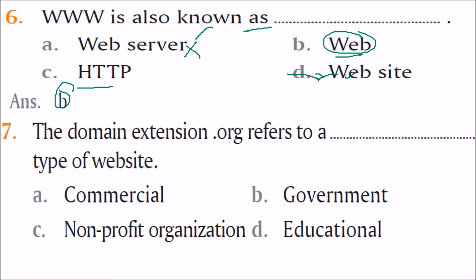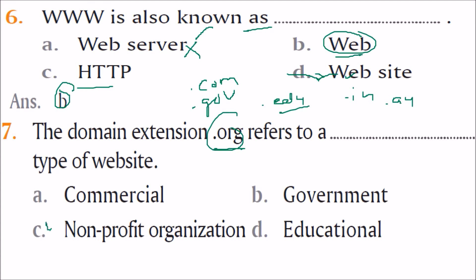The domain extension .org refers to a type of website. We have .com for commercial, .gov for government, .edu for educational institutes, .in for India, .au for Australia. So .org stands for non-profit organization type of website. The answer is C.